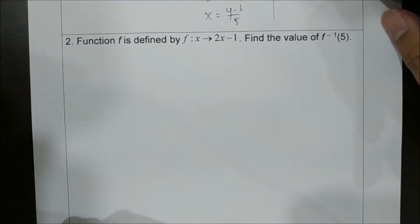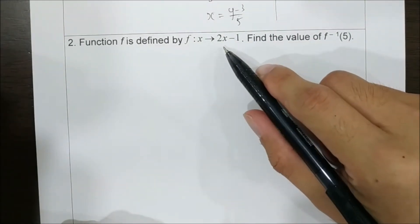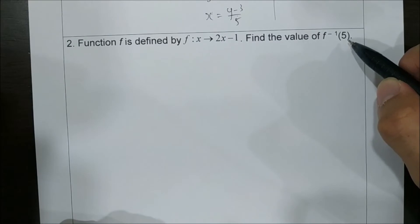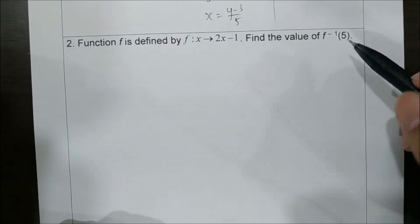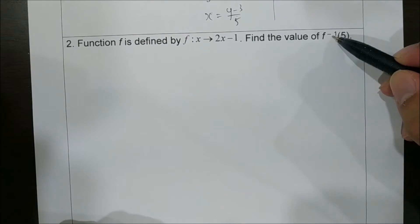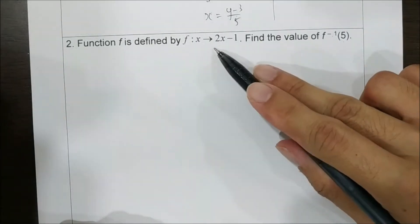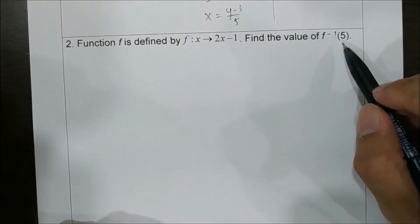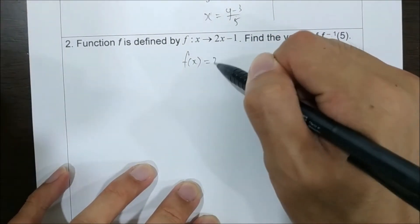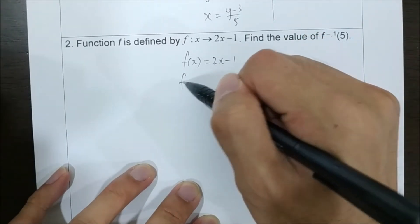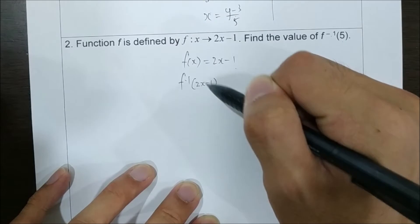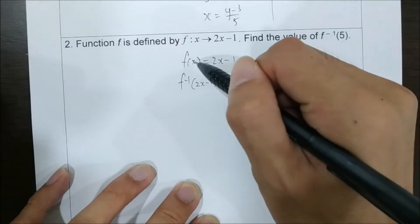Now we go to the second one. Function f is defined by f(x) equals to 2x minus 1. Find the value of f inverse of 5. Since we are given the object here, the first thing we do is find f inverse, then substitute x with 5. Given f(x) equals to 2x minus 1, f inverse of (2x minus 1) will equal to x.